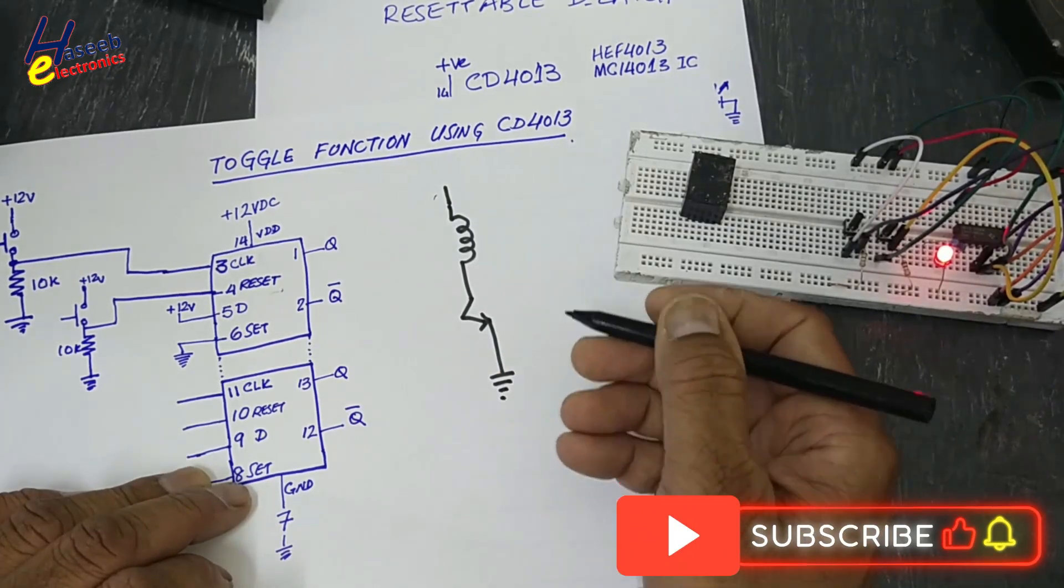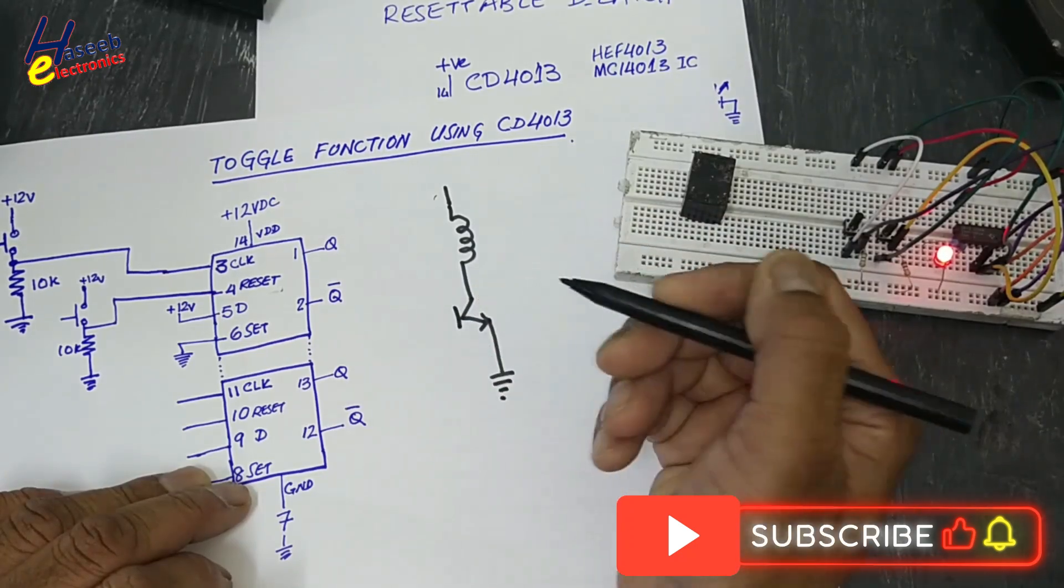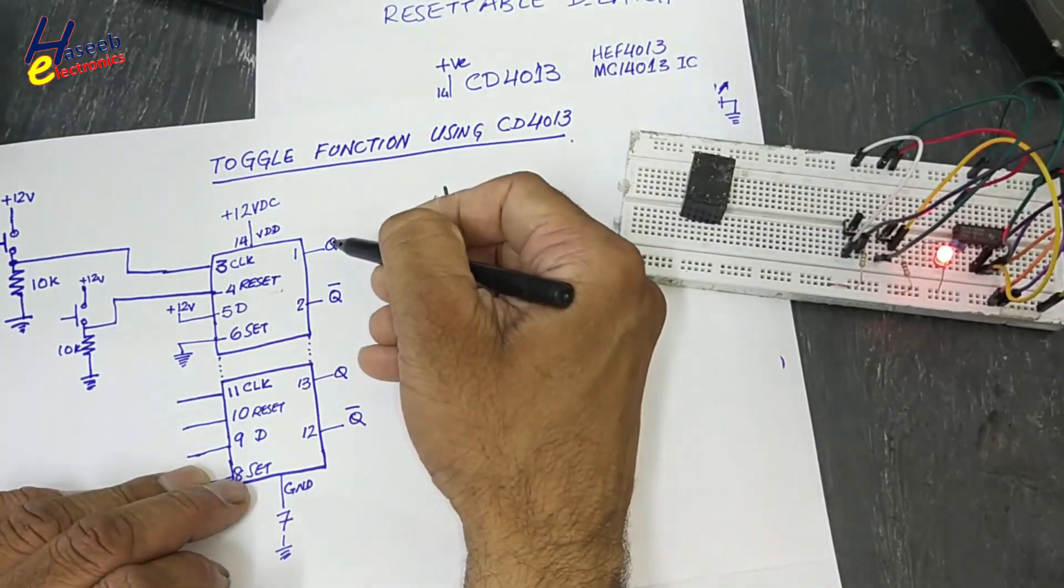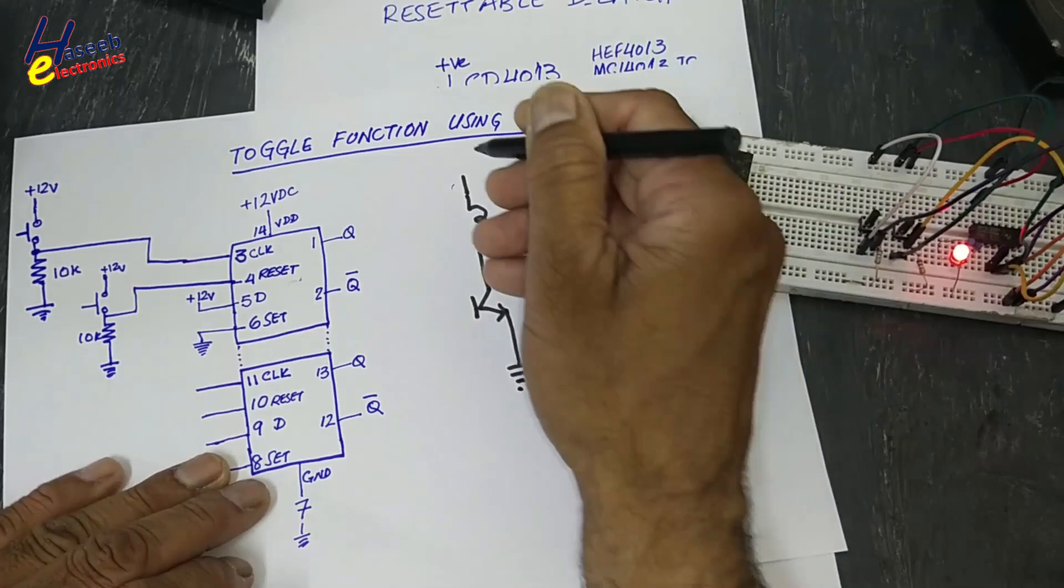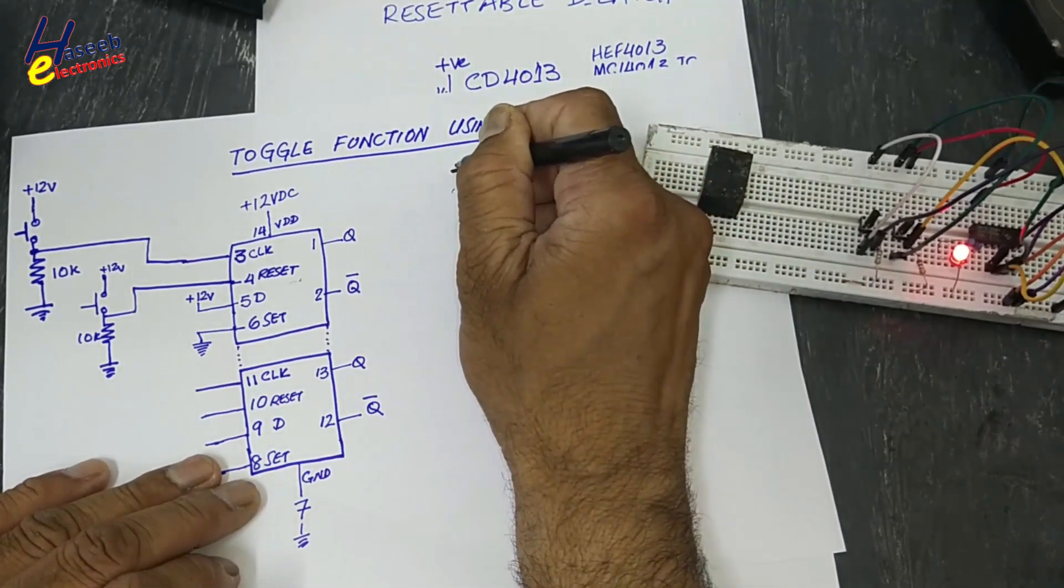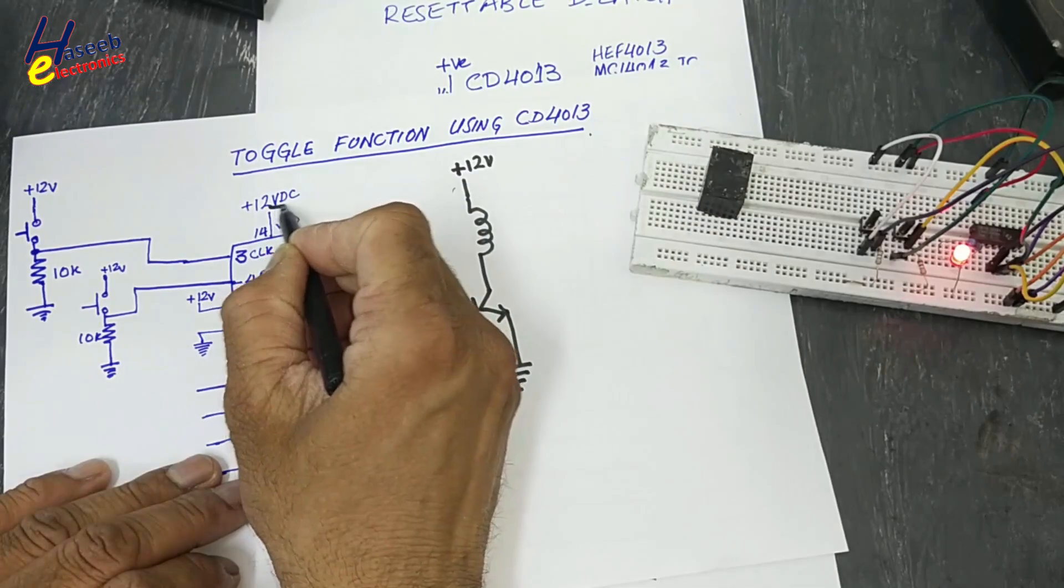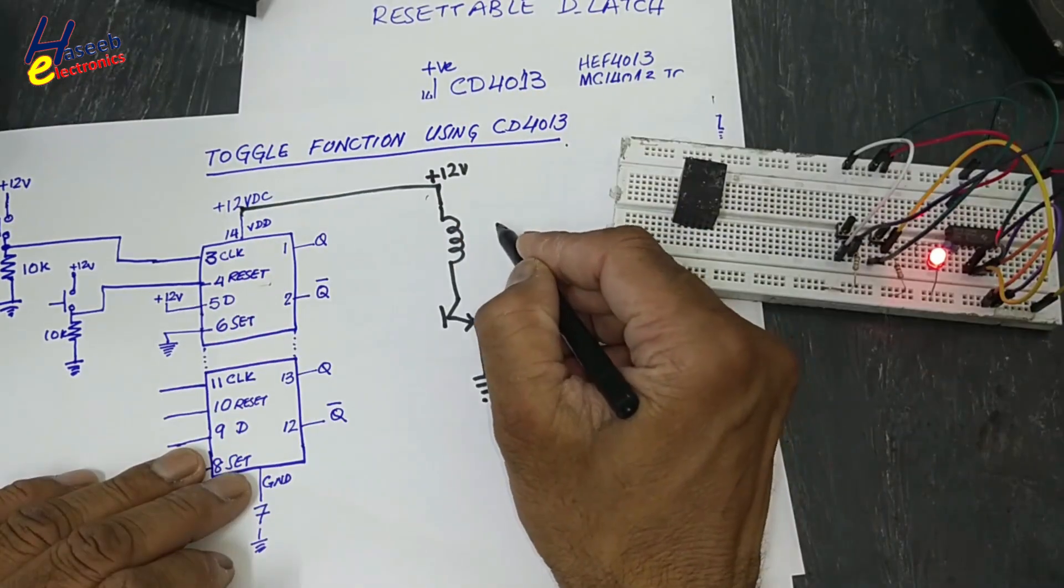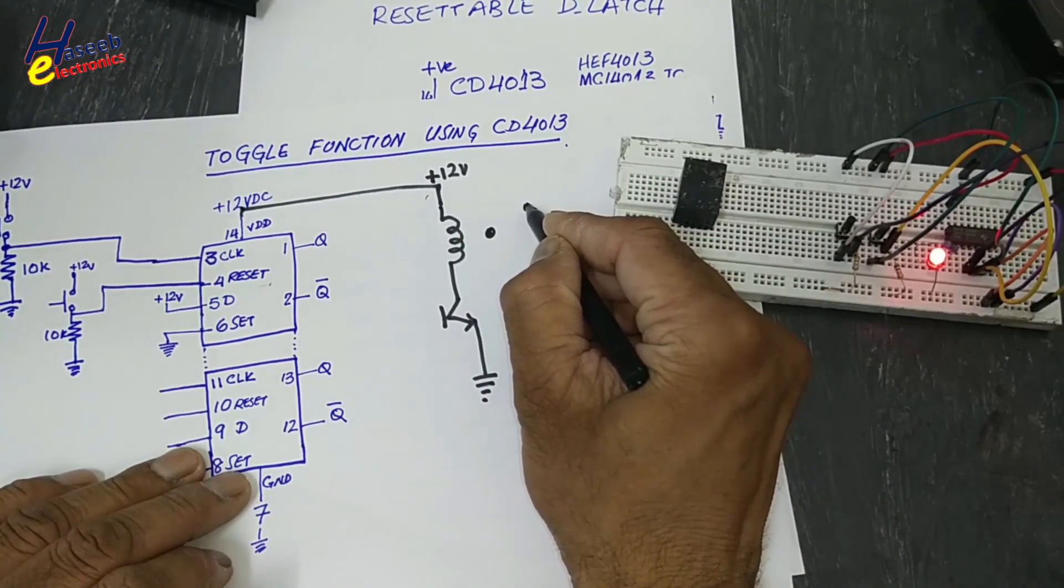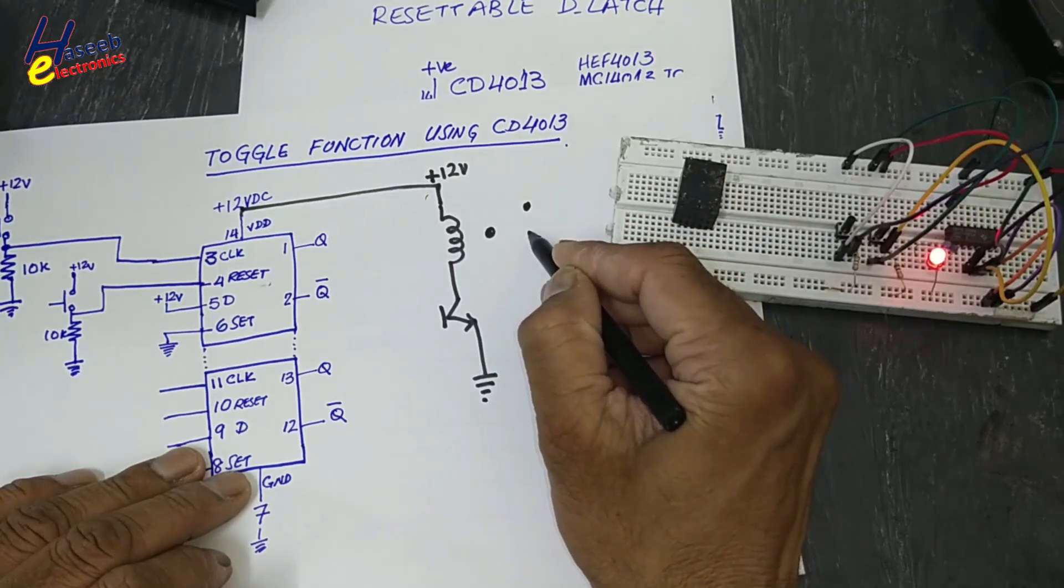Emitter connected to ground, base we will connect to this output. Here we will connect positive voltage 12 volts, same 12 volts here. Relay output points: common, NC, and NO.